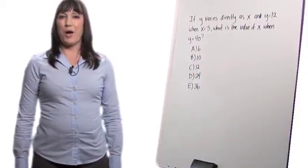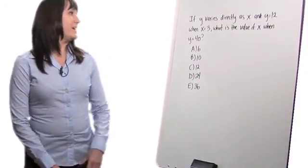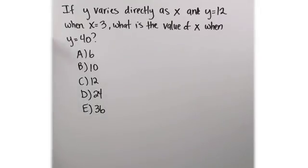Let's look at this problem that involves direct variation. If y varies directly as x and y equals 12 when x equals 3, what is the value of x when y equals 40?